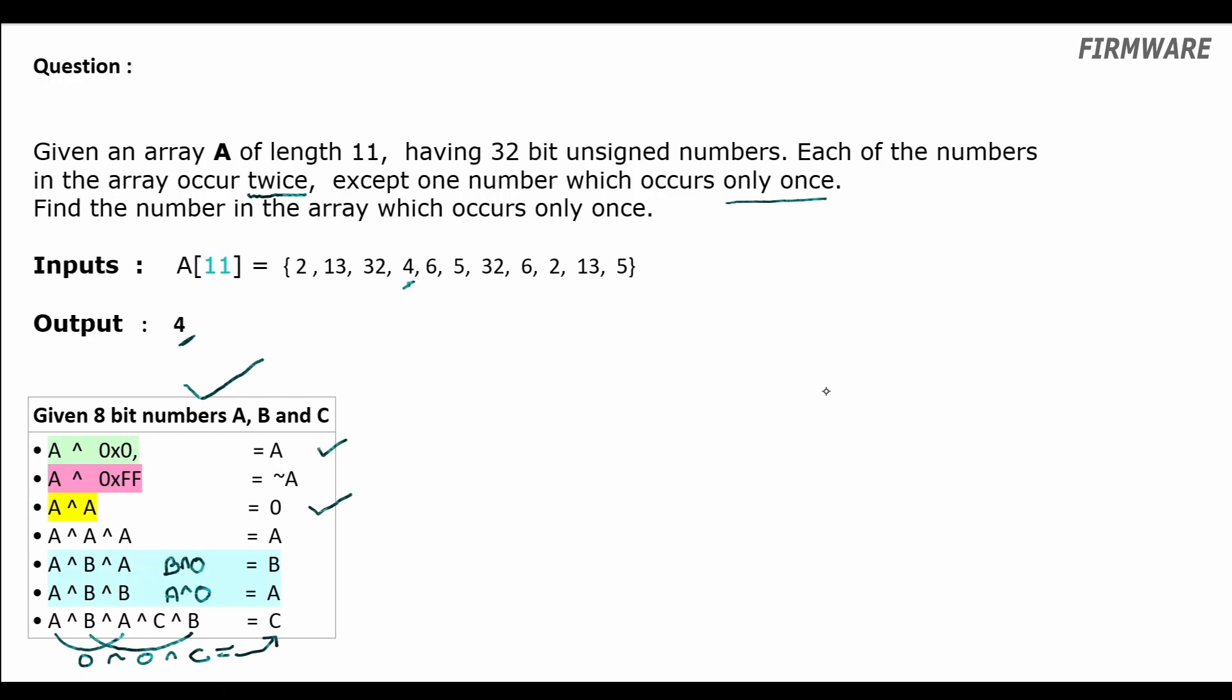So in this question we have 11 elements in the array. Five elements occur twice and there is an element which occurs once. If we do an XOR of all the elements in the array, the numbers which occur twice will XOR with each other to result in zeros. Therefore, the result of the overall XOR will be the number which occurs only once in the array.